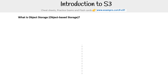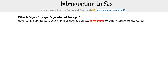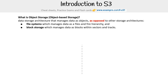So what is object storage, or object-based storage? It's a data storage architecture that manages data as objects, as opposed to other storage architectures — file systems, which manage data as files in a hierarchy, and block storage, which manages data as blocks within sectors and tracks that get stored on an actual drive.